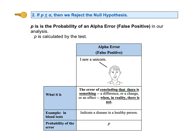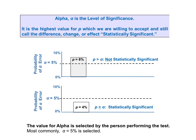We can state up front the maximum probability we are willing to accept and still call the results statistically significant. That maximum probability is alpha — the level of significance. In step two of the five-step method, the person performing the test selects a value for alpha; most commonly five percent is selected. Alpha defines the boundary between the values of P which indicate a statistically significant difference, change, or effect, and those which don't. If P is calculated to be eight percent, then P is greater than alpha and we fail to reject the null hypothesis. If P is calculated to be four percent, then P is less than alpha and we reject the null hypothesis.